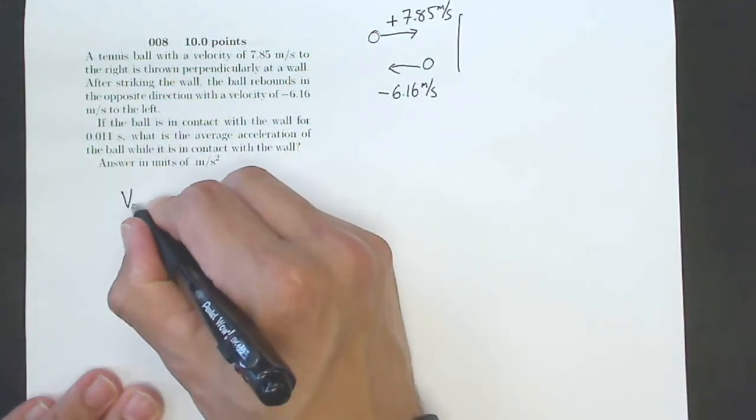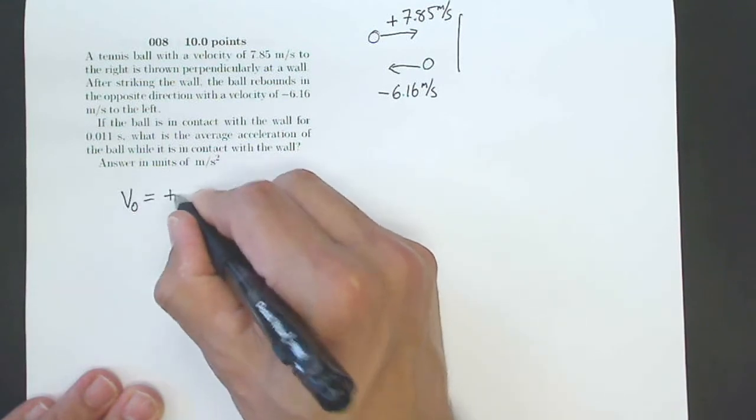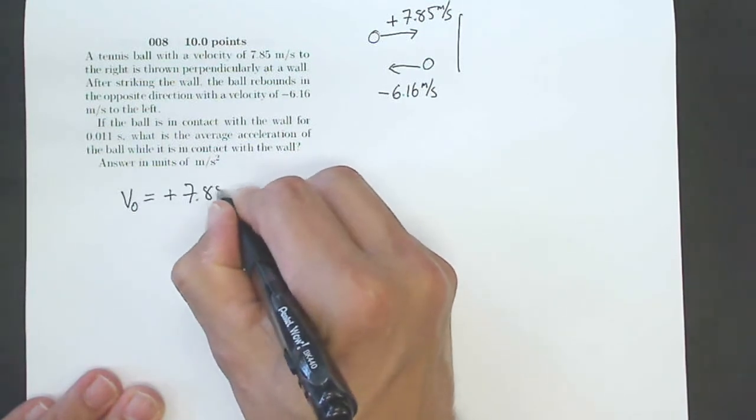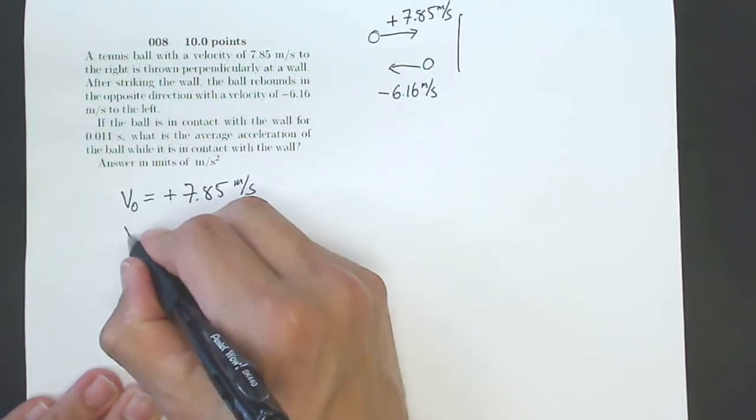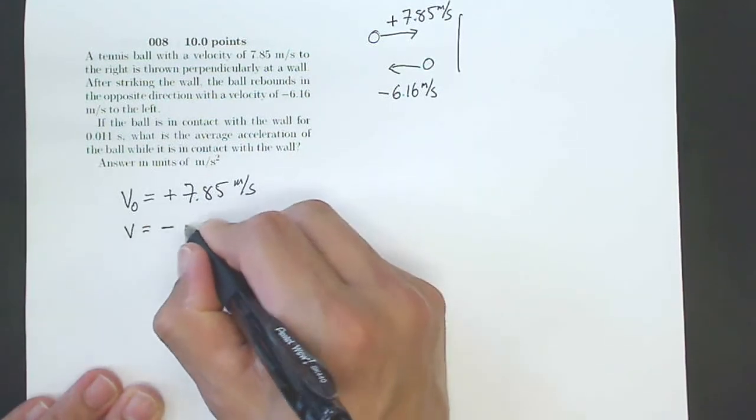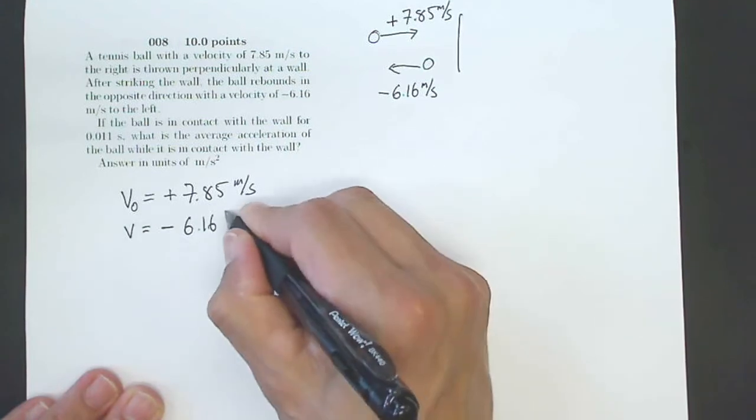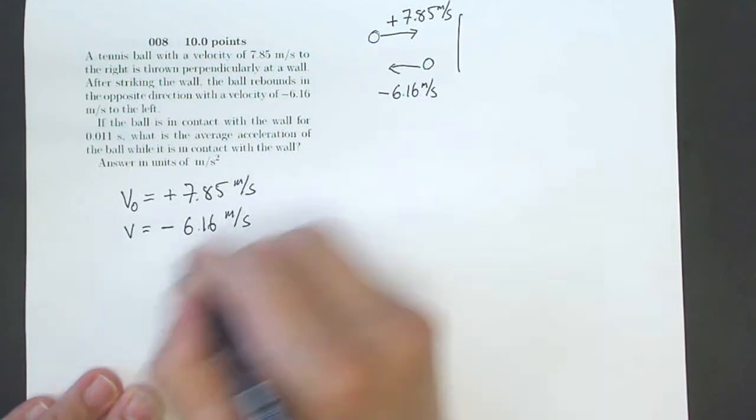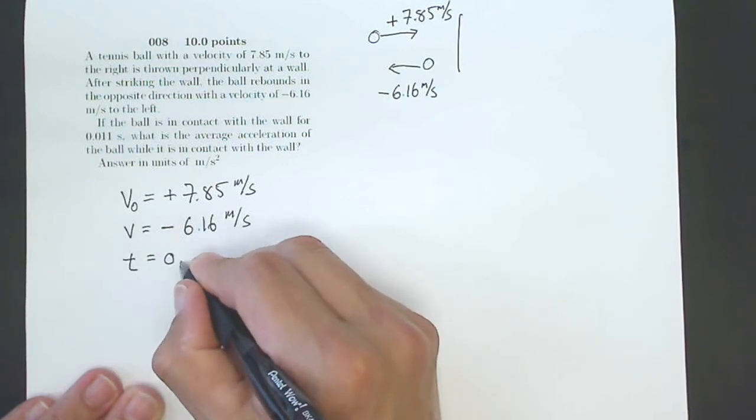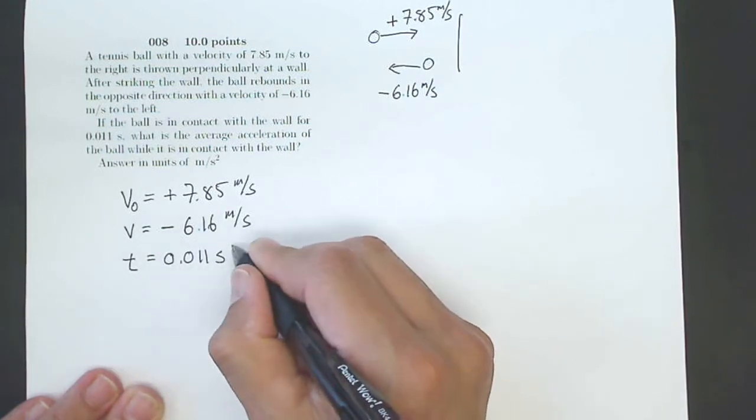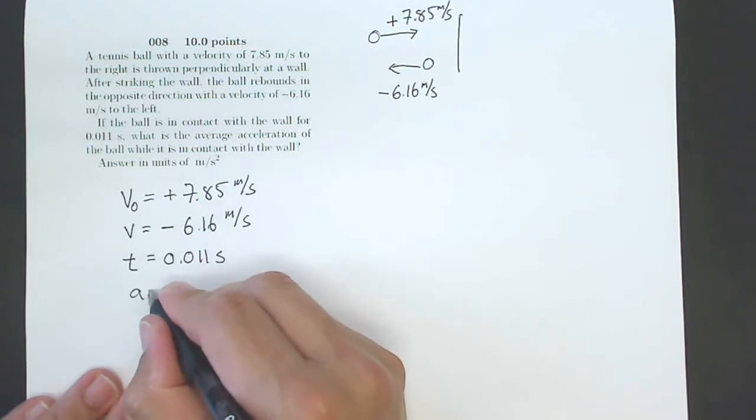So what I've got is my initial velocity of positive 7.85 meters per second. I've got a final velocity of negative 6.16 meters per second. I have a time of contact is 0.011 seconds. And I'm looking for my acceleration.